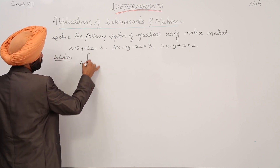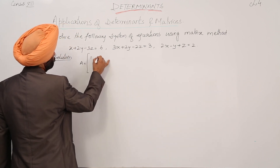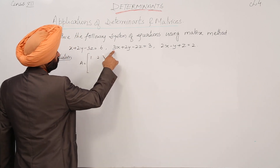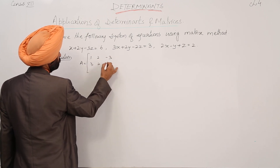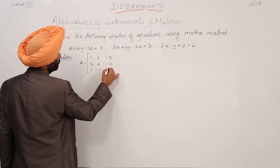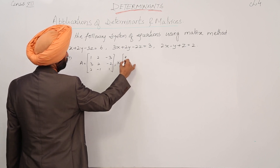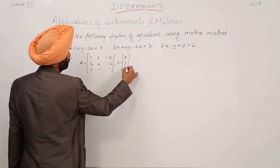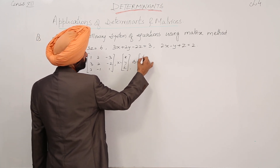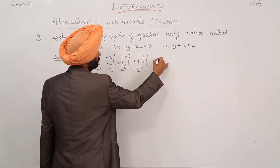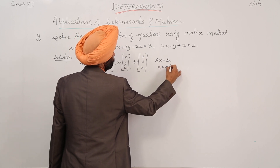A is equal to the coefficient of x, y, and z: 1, 2, 1; 2, minus 3, 3; 2, minus 2, minus 1. X is equal to the vector x, y, z. And B is equal to 6, 3, 2. We get Ax = b, or you can write x = A inverse b.